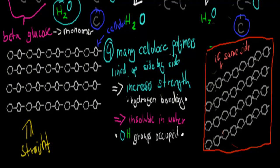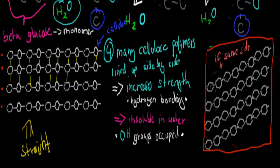A fourth feature is that many cellulose polymers line up side by side — all straight, all next to each other. This allows hydrogen bonding between the chains, connecting each polymer to the next. That means they're packed really closely and really strongly. Since cellulose is in plant cell walls, which have to be tough and rigid, those hydrogen bonds provide the required strength.